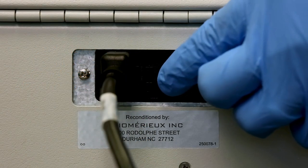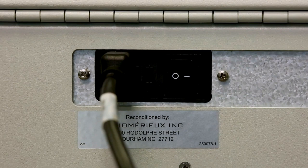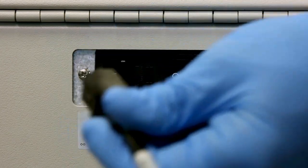To power off the Analyzer, press the power switch located on the lower back side of the Analyzer to the off position. Then, disconnect the power cord.